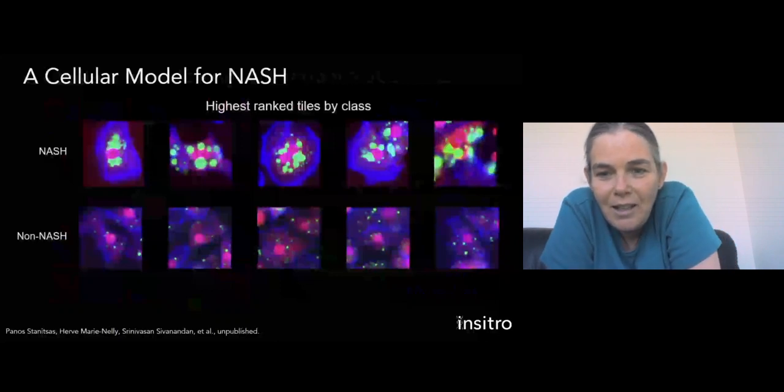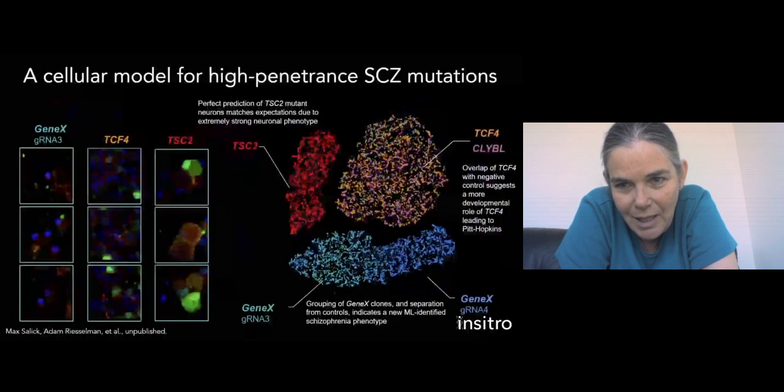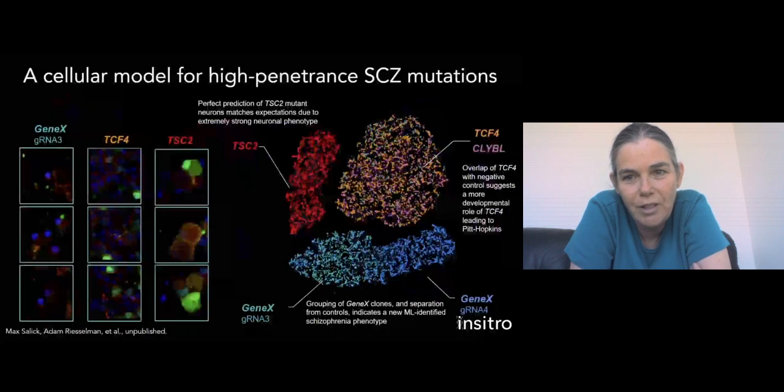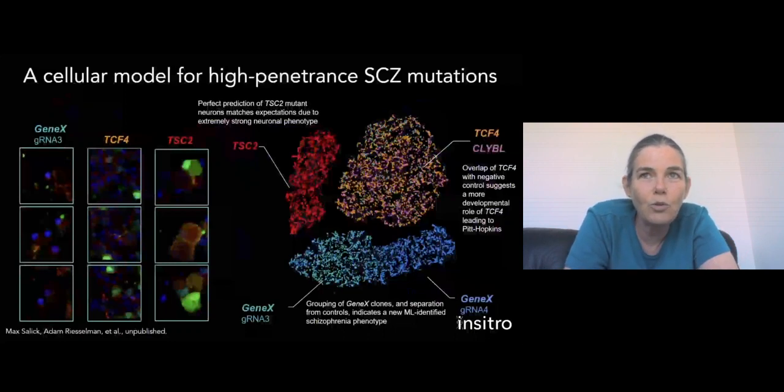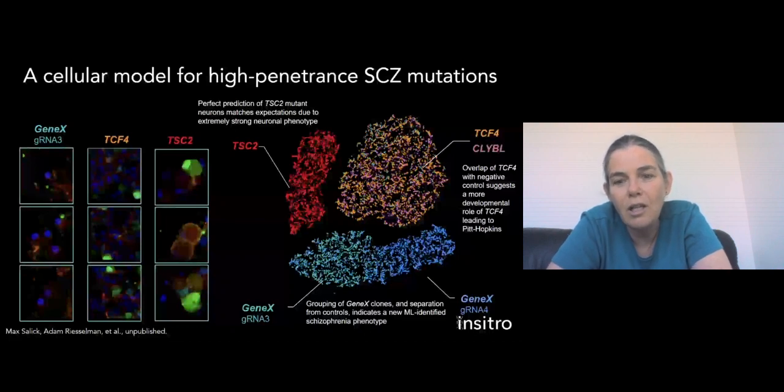So the last case study that I'd like to show you is something that we've done not in NASH, but in CNS diseases that have to do with schizophrenia and autism that are often two sides of the same coin and share a lot of genetics. And so this actually brings those two pieces together because what we did is we took a single cell background and we created different mutations in that single cell background using CRISPR that corresponds to different high penetrance variants that have been identified in recent whole genome sequencing of autism and schizophrenia patients.